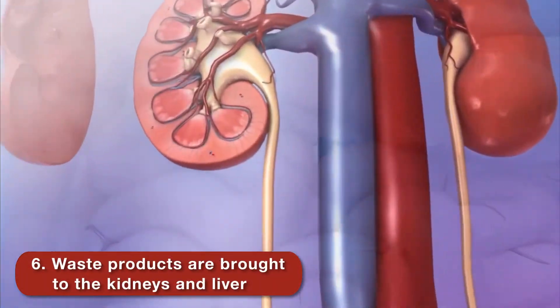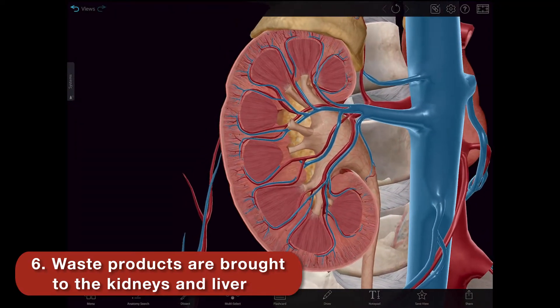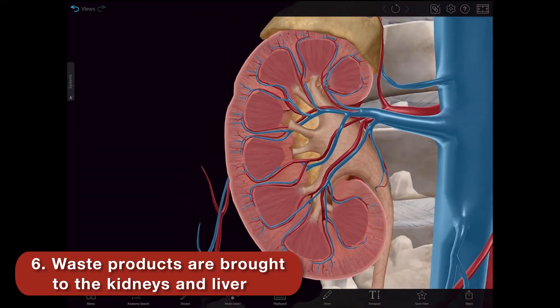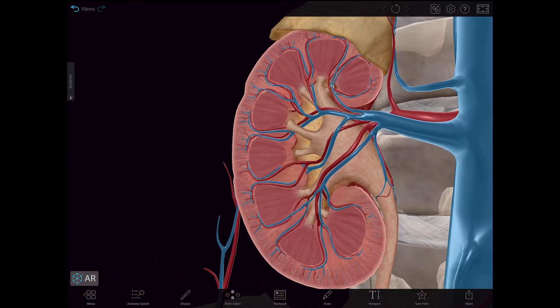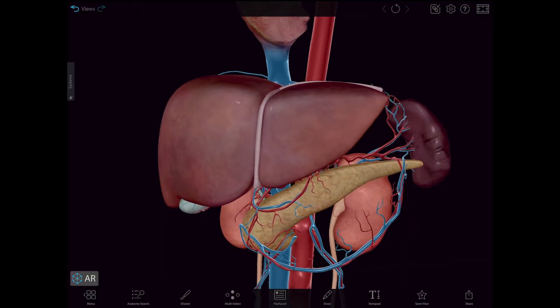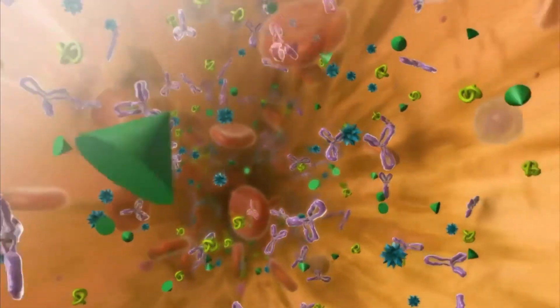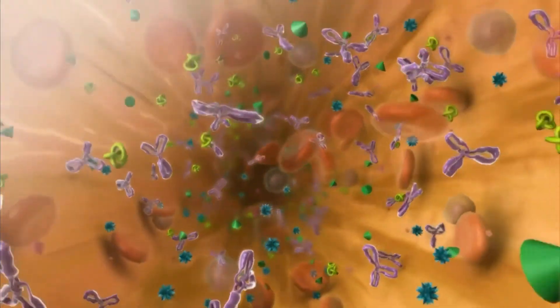Blood transports waste substances to the kidneys and liver. It flows into the kidneys through the renal arteries and out through the renal veins. The kidneys filter the waste substances out of the blood plasma and into the ureters. The liver removes toxins from blood. During digestion, the liver cleans blood that has been enriched with vitamins before sending it back out to the rest of the body.